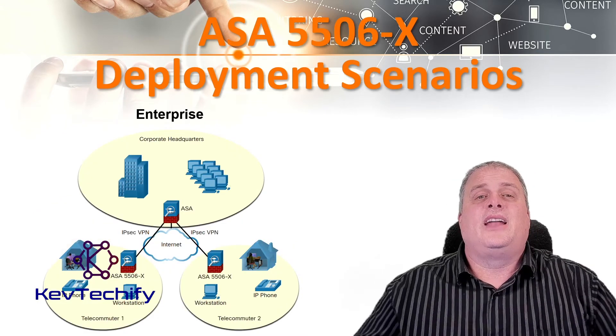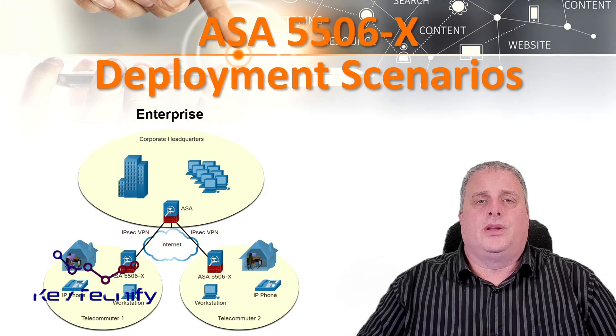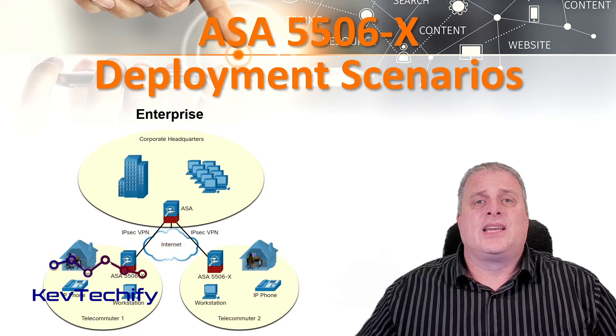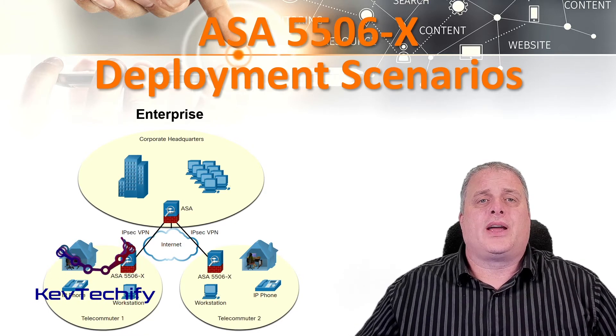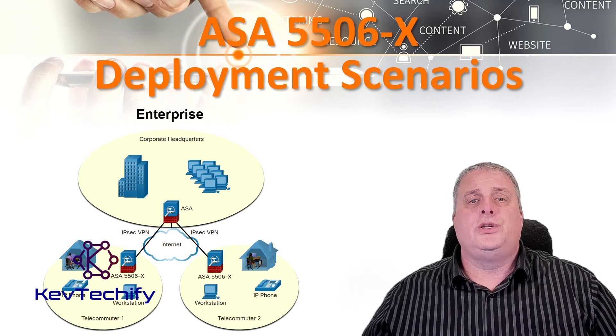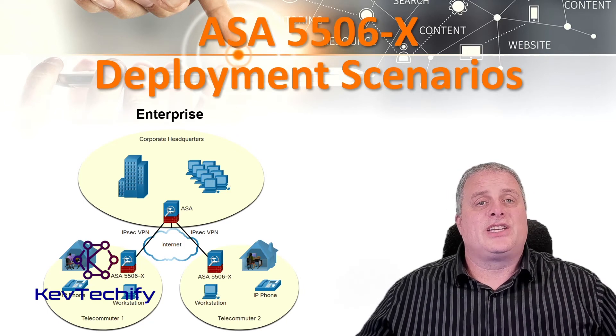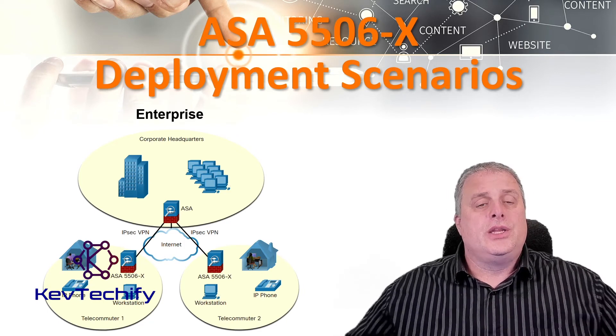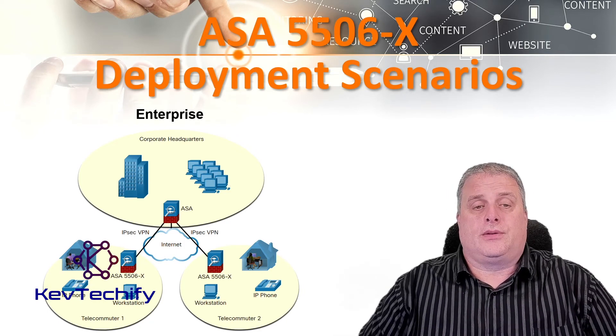In an enterprise deployment, the ASA 5506X can be used by telecommuters and home users to connect to a centralized location using a VPN.